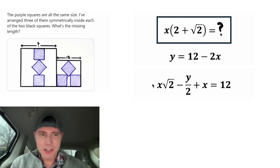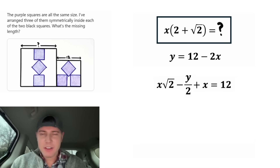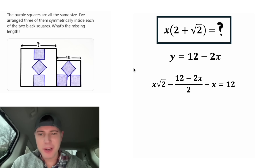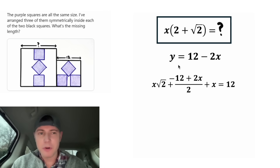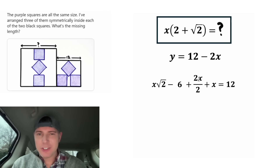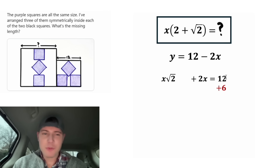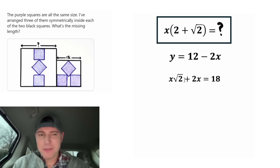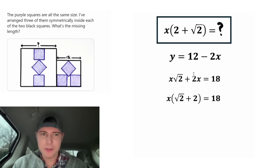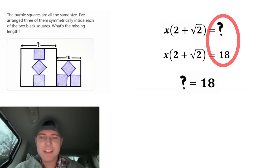We can plug 12 minus two X in place of Y. This negative distributes to both terms, so positive 12 minus two X becomes negative 12 plus two X. Writing as separate fractions: 12 divided by two is six, two X divided by two is X, and X plus X is two X. Adding six to both sides — negative six and positive six cancel — 12 plus six is 18. The two terms on the left have an X, so factoring out X leaves us with root two plus two. So 18 equals X times the quantity root two plus two, and that is the answer.